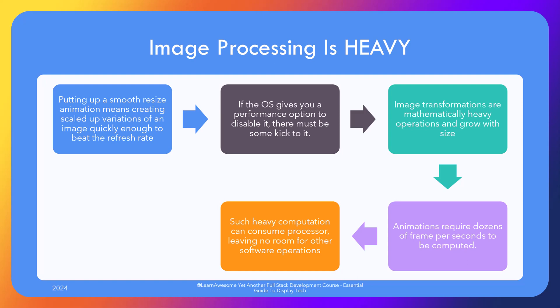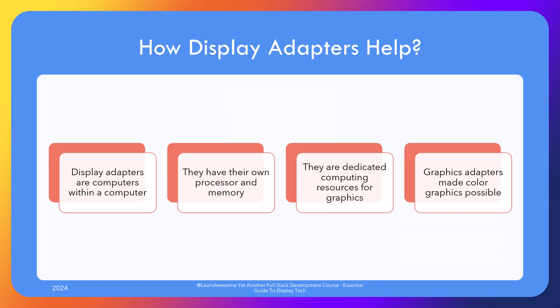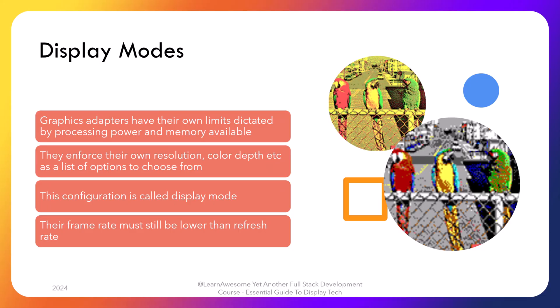Early gaming consoles used highly pixelated content to keep the game manageable within hardware limits. To fix the problem of any graphics-intensive operation taking all processing power off your computer, graphics adapters were introduced — dedicated graphic processors with their own memory and processor to handle graphics operations. Color Graphics Adapter, or CGA, from IBM was the first graphics card which made color graphics possible. It supported only 160 x 100 in 16 colors or 320 x 200 in 4 colors. Graphics adapters had their own limits, enforcing their own resolution, color depth, etc., known as display mode.